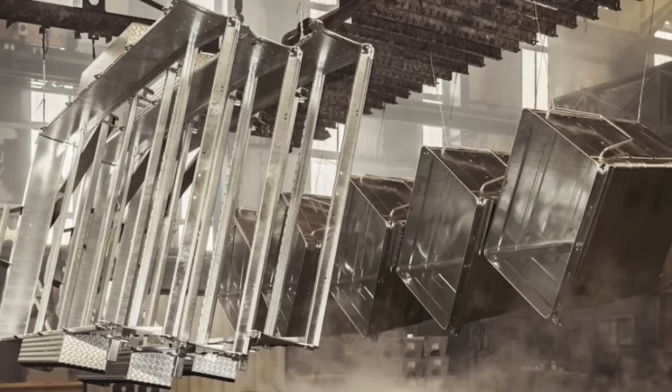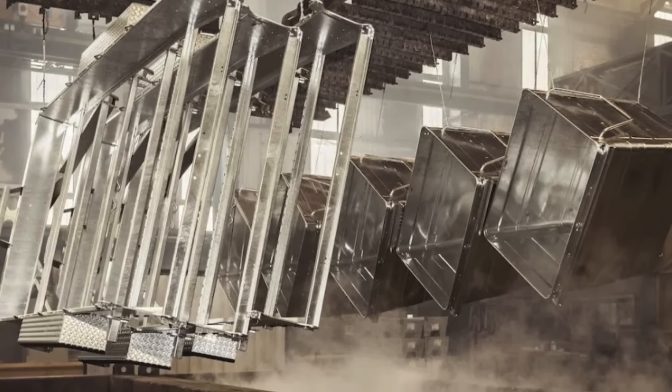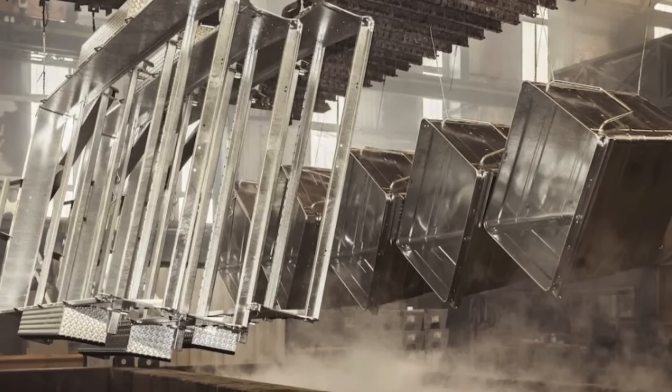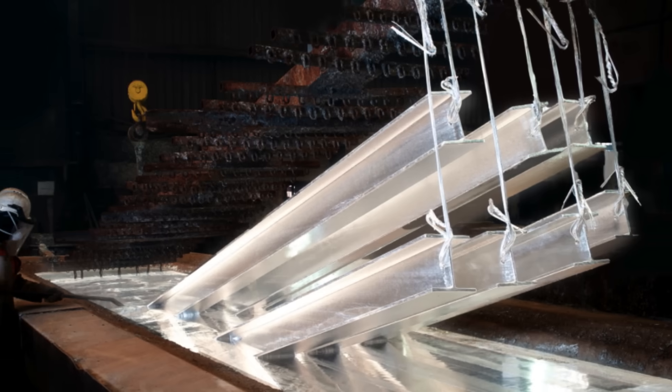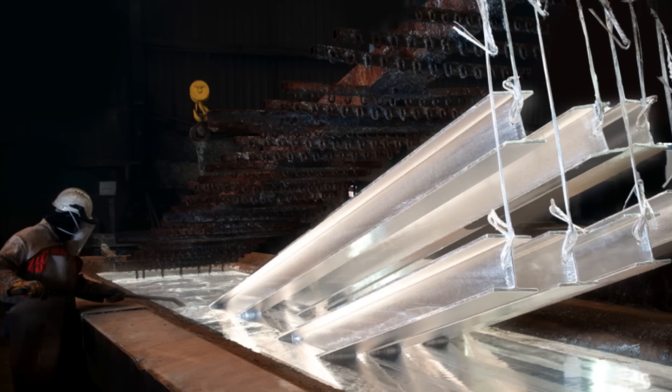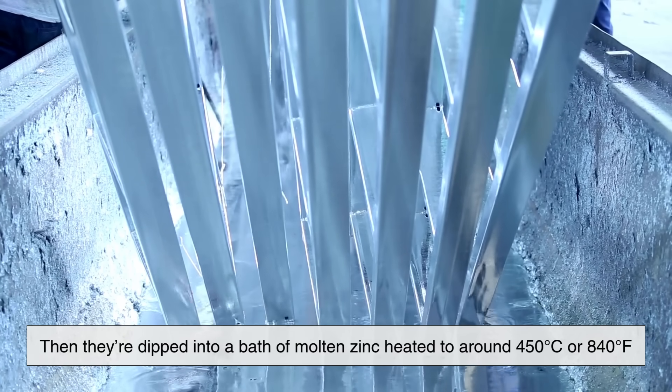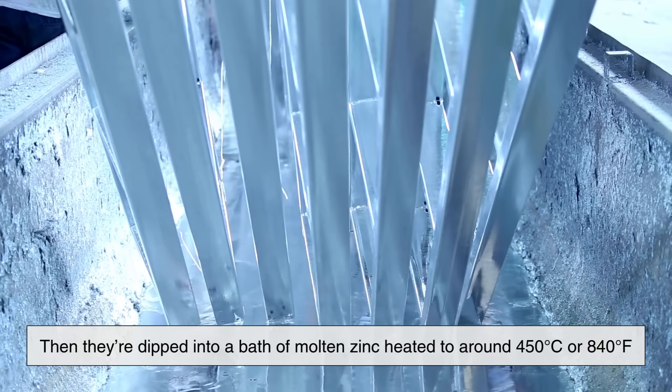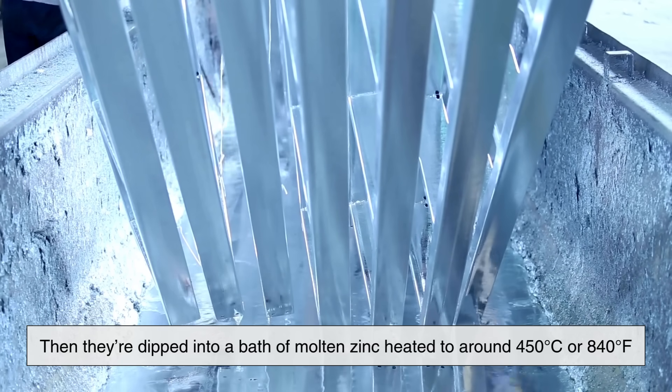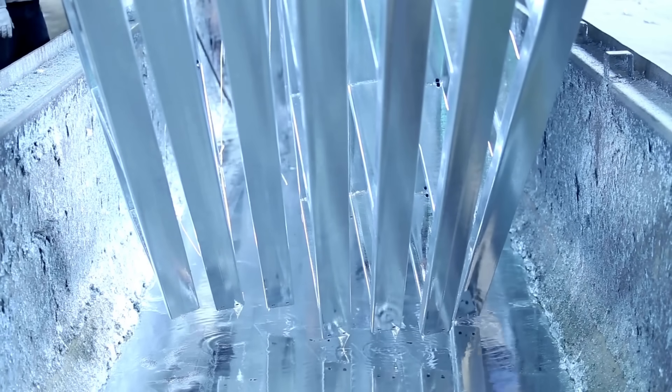The most common method of producing galvanized metal is called hot-dip galvanizing, and the process is as industrial and impressive as it sounds. Large sheets, pipes, or parts of steel are cleaned thoroughly to remove oil, rust, and impurities. Then they're dipped into a bath of molten zinc, heated to around 450 degrees Celsius or 840 degrees Fahrenheit.